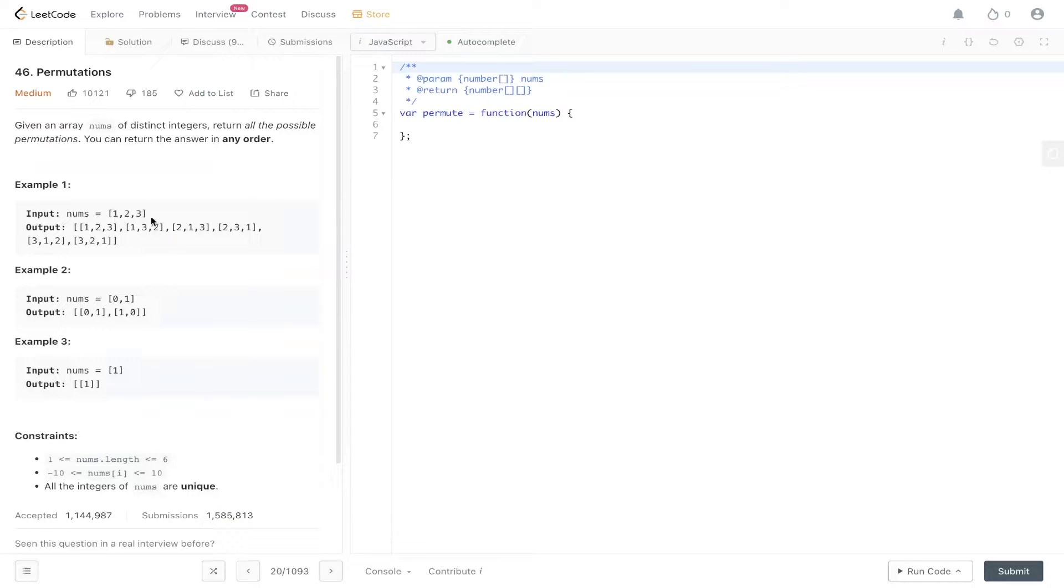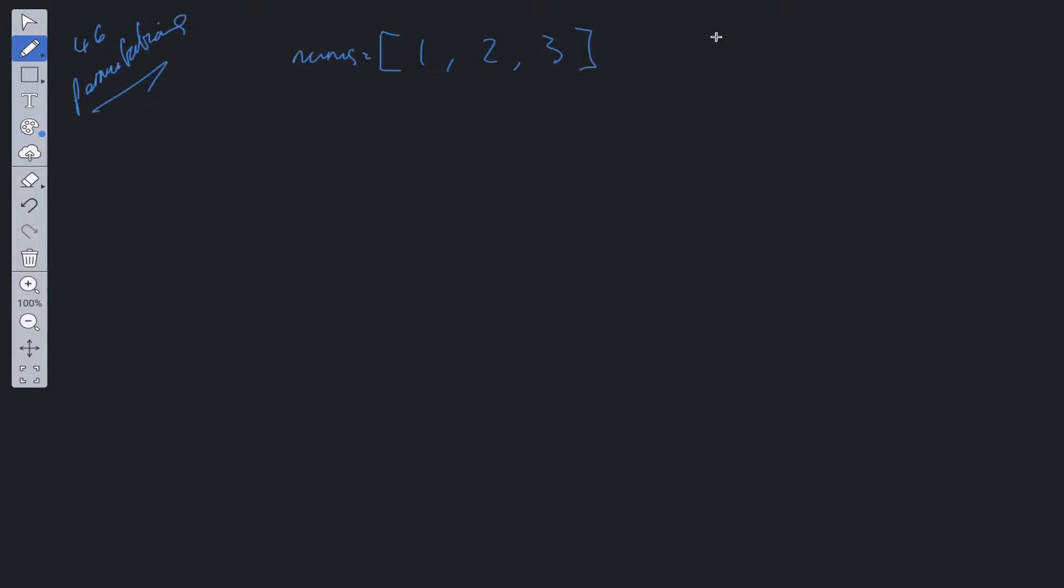So as you can see, what this question is asking for is of one, two, and three, we have six different permutations there. With this question, the solution will be using some form of recursion, and in this case it will be used in backtracking.